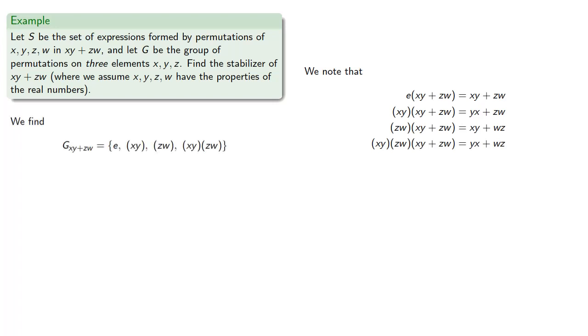And so, our stabilizer is going to be the set consisting of the elements, the identity, XY, ZW, and XY, ZW.